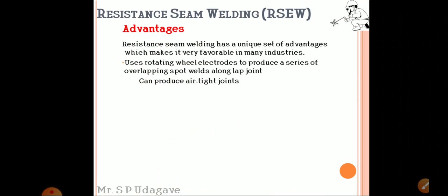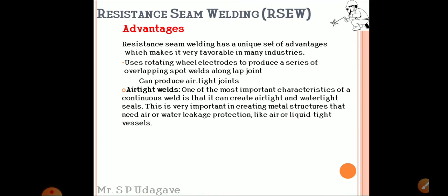Resistance seam welding has a unique set of advantages which makes it very favorable in many industries. It uses rotating wheel electrodes to produce a series of overlapping spot welds along a lap joint and can produce air-tight welds. One of the most important characteristics is that it can create air-tight and water-tight seals, which is very important for metal structures that need air or water leakage protection, like air or liquid-tight vessels.